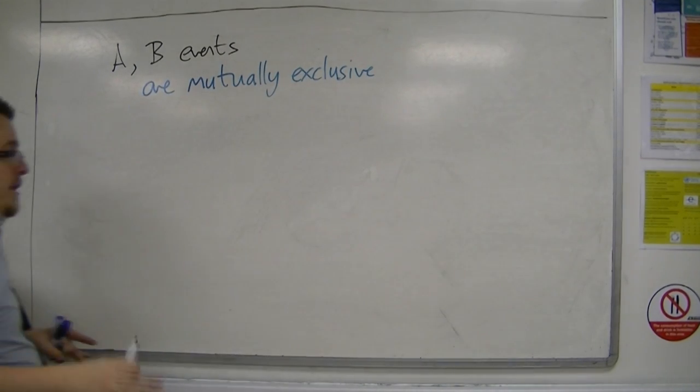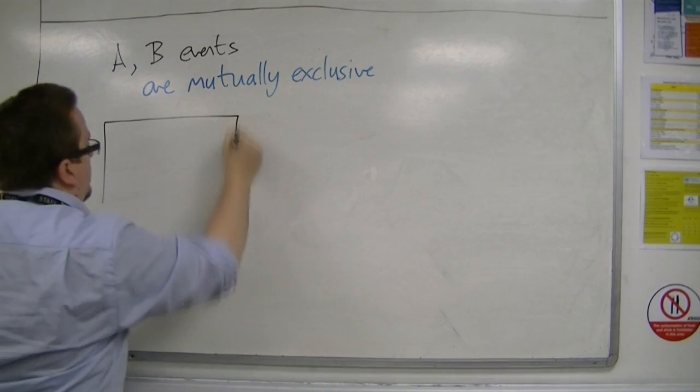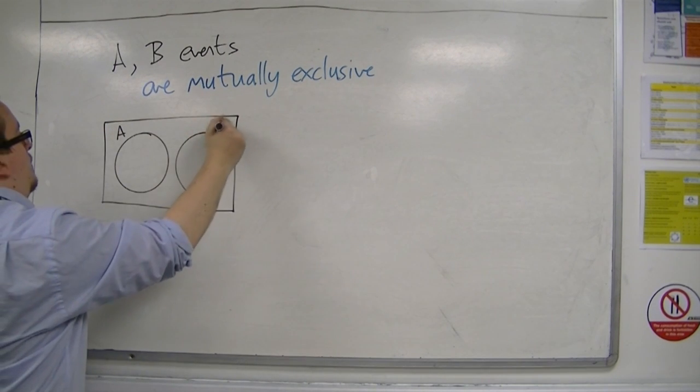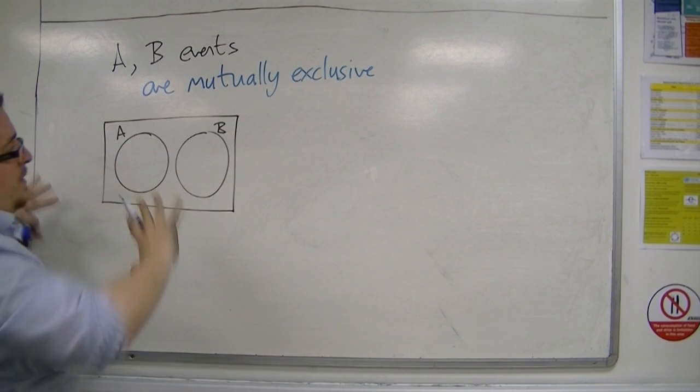With a Venn diagram, if you wanted to see this visually, what it would mean is that the two circles would not overlap. There would be no intersection between A and B because they cannot happen at the same time.